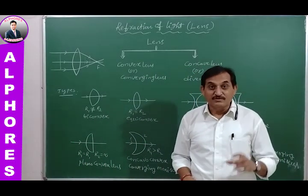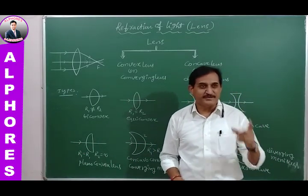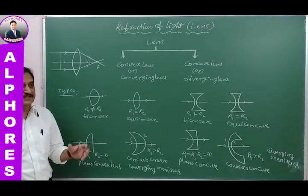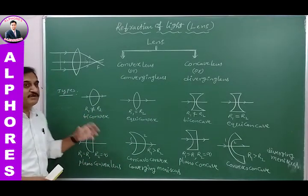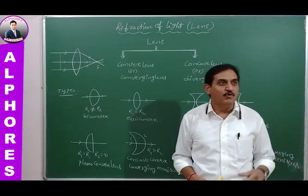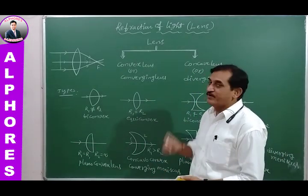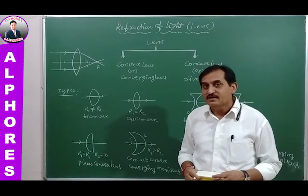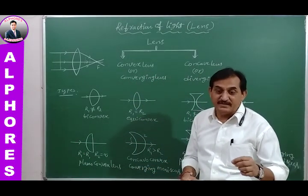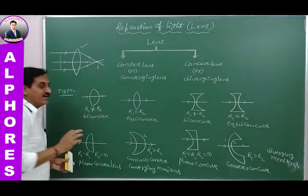When a parallel beam of light is incident on a converging lens, after refraction all light rays collect and converge at one point — the focused point — where the image can be seen. This is the converging or convex lens.